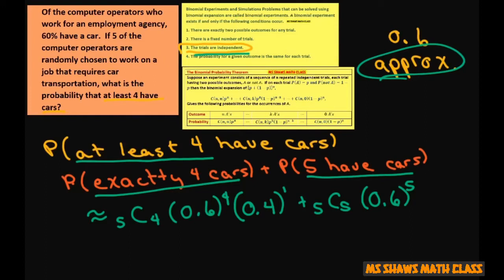Because at least four means four or five, and or means to add. So this is going to be approximately 0.259 plus 0.078, which equals 0.337.